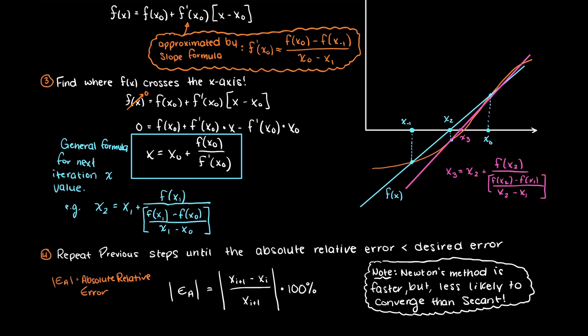Just as a final note, it is not a good idea to just randomly select your initial guesses for x. We often want to look at a graph and pick values near our root of interest. This will not only make convergence faster but also much more reliable.